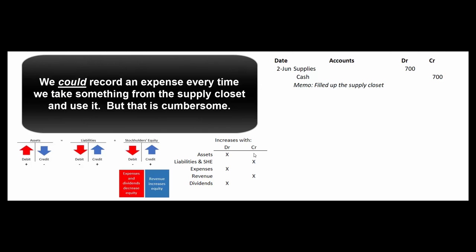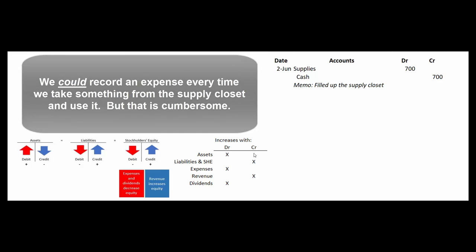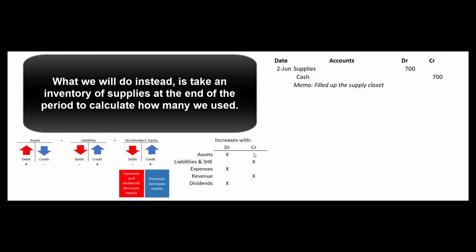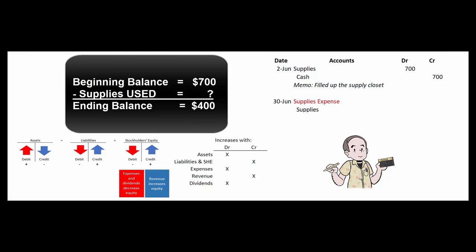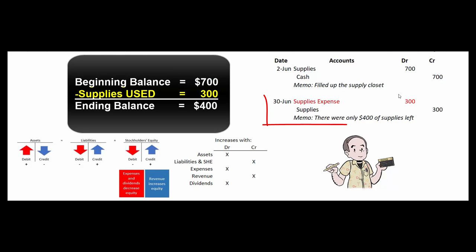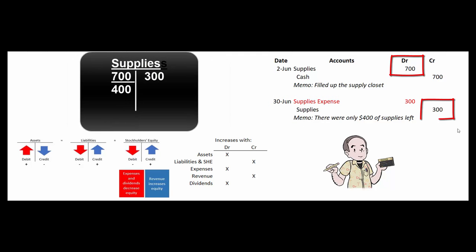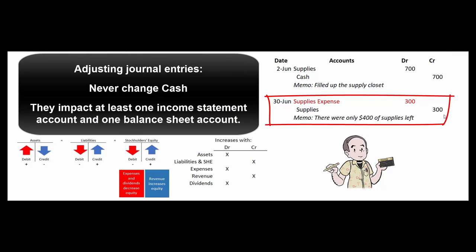But what we won't do is every time we take a pad out or every time we take a pen out, we won't debit supplies expense and credit the asset supplies. Especially in accounting class, what we'll do is we'll go in at the end of the month, count up how many supplies are left and then figure out how many dollars worth of supplies we must have used. So on June 30th we dispatch the intern into the supply closet and ask them to tell us how many supplies are left. So they do an inventory, they discover that there's $400 of supplies left. If we started with $700 and there's only $400 left, we must have used $300. So we debit supplies expense for $300 and reduce the asset supplies for $300. If you looked at a T account for the asset supplies after that adjusting journal entry, you would see that it now has a balance of $400 which is what the intern told us was left. Please note that in this adjusting journal entry we didn't debit or credit cash, but we did debit one income statement account and credit one balance sheet account.